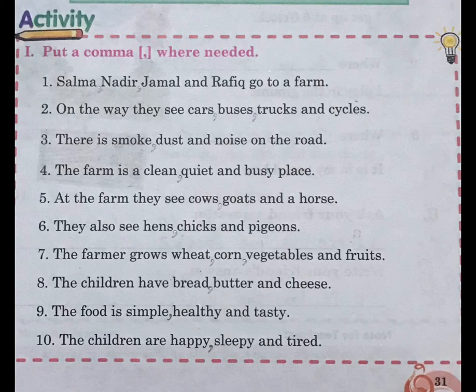Number 4: The farm is a clean, quiet and busy place. Number 5: At the farm they see cows, goats and a horse. Number 6: They also see hens, chicks and pigeons. Number 7: The farmer grows wheat, corn, vegetables and fruits. Number 8: The children have bread, butter and cheese.